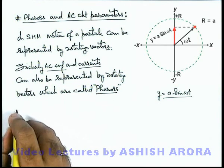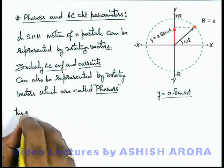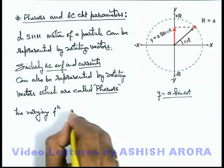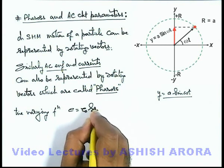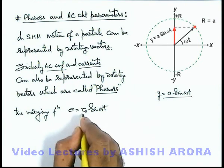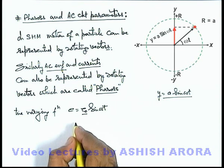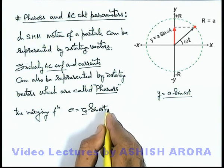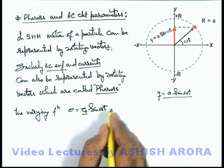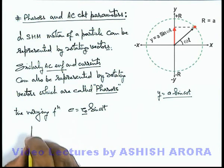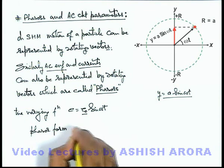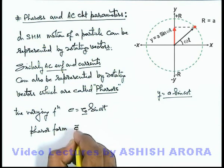Like if we talk about the time varying function of an EMF which can be given as E_0 sine omega t, here we know E_0 is the peak value or EMF amplitude which is the radius of a rotating vector and here we can see the initial phase is zero. So this is the time varying function and if we talk about its phasor form, then in phasor form it is written as E phasor. Phasor is represented by placing a bar over the symbol.